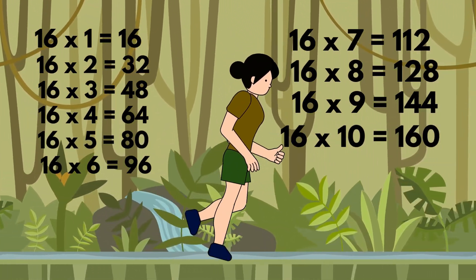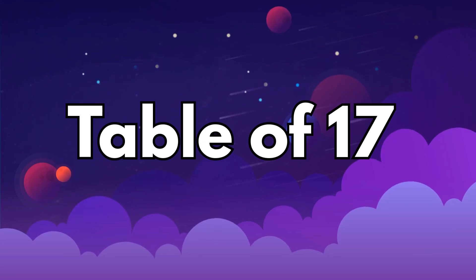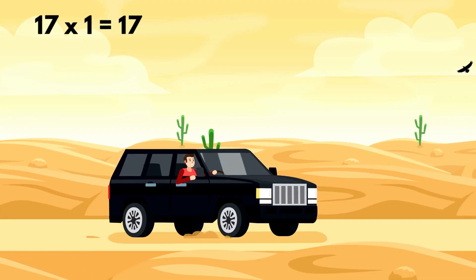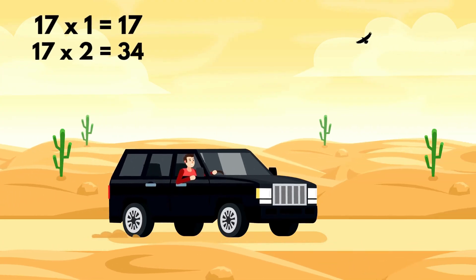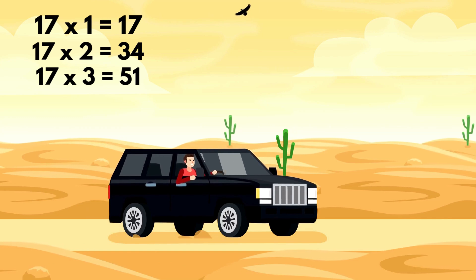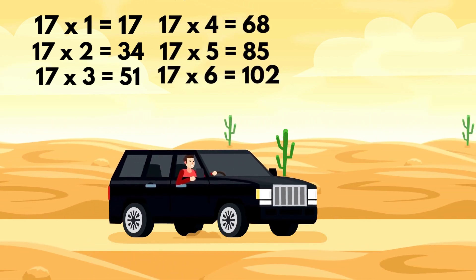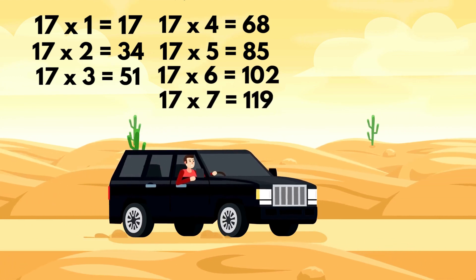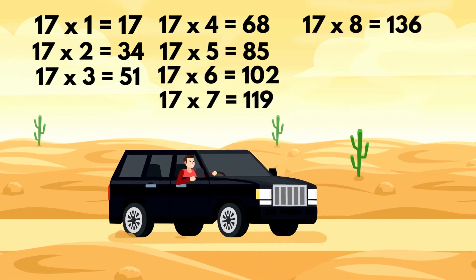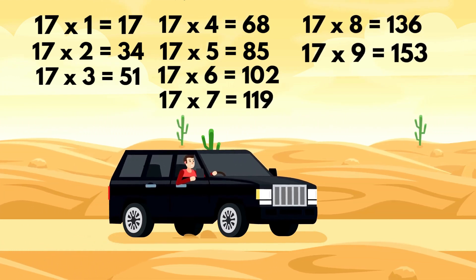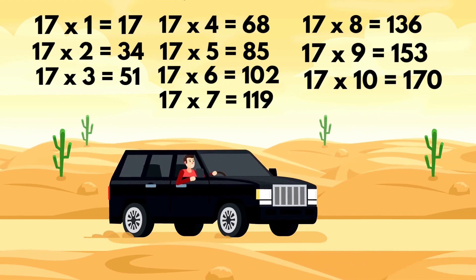Table of 17. 17 1's are 17, 17 7's are 119, 17 8's are 136, 17 9's are 153, 17 10's are 170.